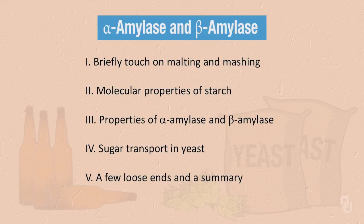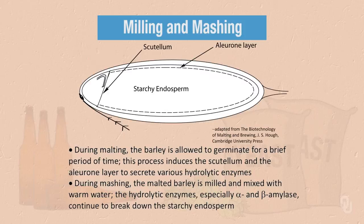Then we will talk about some of the molecular properties of starch. Some of this material will be reviewed, but that is a good thing because it helps to reinforce important concepts. Then we will move on to talk about the properties of alpha amylase and beta amylase. Our next topic will be sugar transport in yeast, and finally we will tie up some loose ends and summarize our discussion.